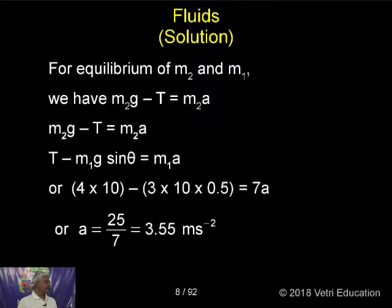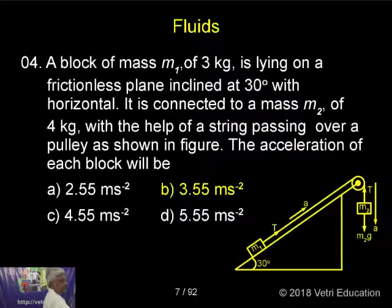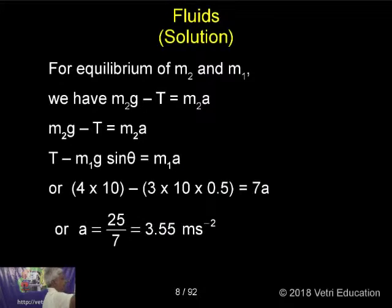Then we can get 7a, or a is equal to 25/7, so a equals 3.55 ms⁻². For equilibrium, equilibrium means the body's upward force must equal the downward force. You have m₂g - the diagram shows m₂g minus tension T equals m₂a.